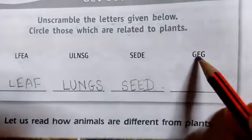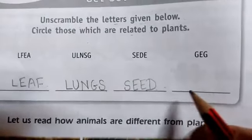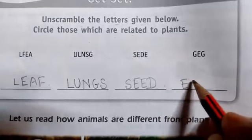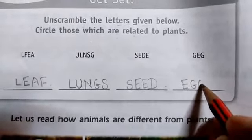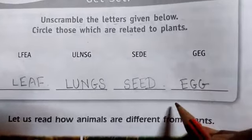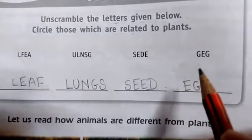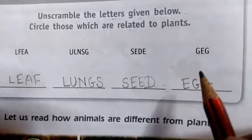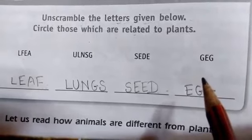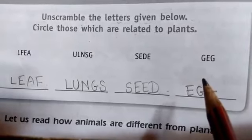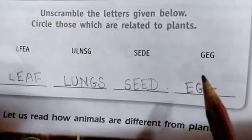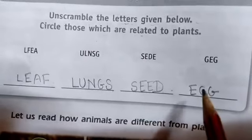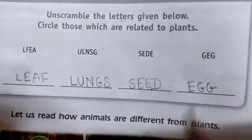Next word: G-E-G — that makes EGG, E-E-double-G. Egg means anda. When animals lay eggs, after some time these eggs develop — after hatching — into chicks. This is egg.